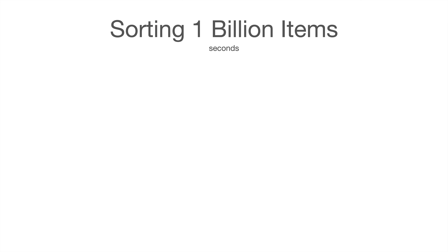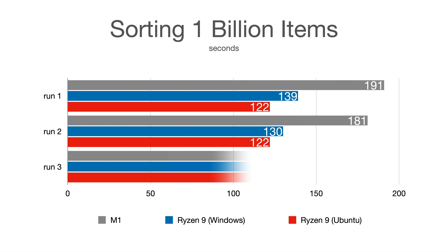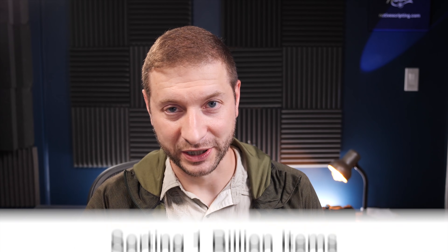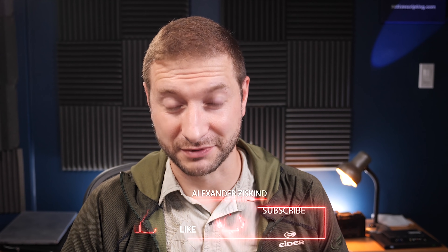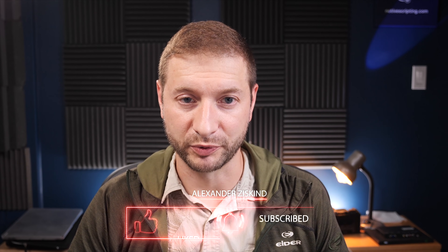I'll throw the results up on the screen right now. Our M1 didn't do so well this time - usually I have more faith in it and it usually wins some of these tests. But in this case the Ryzen 9 takes it in Windows. And furthermore, Ubuntu actually beats Windows by a little bit, so Ubuntu with Ryzen 9 beats all of these. Very nice. If you didn't see my video comparing the M1 to the Intel MacBook Pro, check it out right here. Thanks for watching and I'll see you next time.